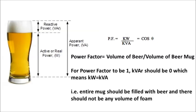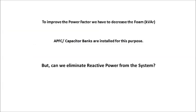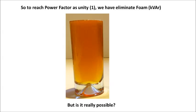Now the next question is improving power factor. We have APFC and capacitor banks installed for this purpose. But the question is, can we eliminate reactive power from the system? Because in order to obtain the maximum possible value of power factor — that is 1 — reactive power must equal zero. Going by this explanation, if we want to keep power factor at unity, we have to completely eliminate reactive power from the system, meaning the foam should be completely removed and the entire mug filled with beer. The benefits of improved power factor are a completely different subject.